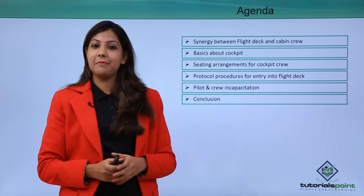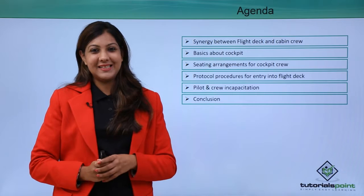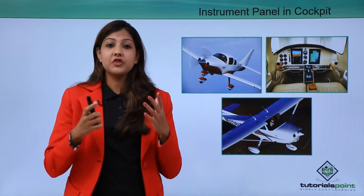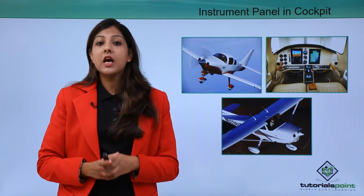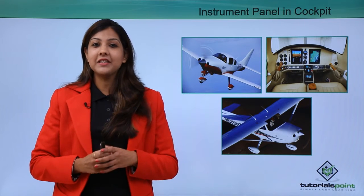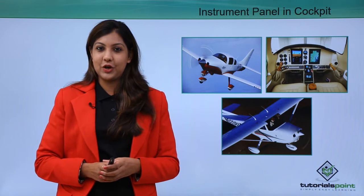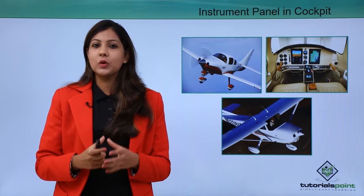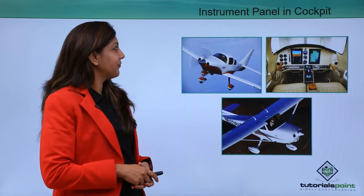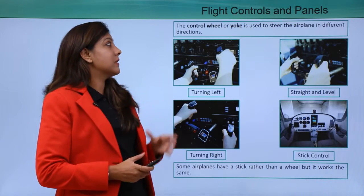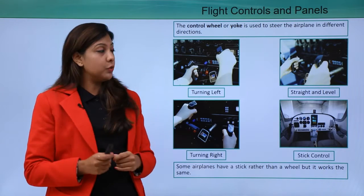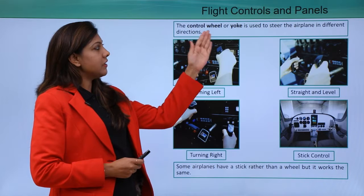In the cockpit there are a lot of instruments and control panels which the cockpit crew uses to take off, land the flight, and reach its destination on time. These controls and panels are only in the cockpit and not inside the cabin area. Let's look at the flight controls and panels — we have the control wheel, also known as a yoke, which is used by the cockpit crew to steer the airplane.